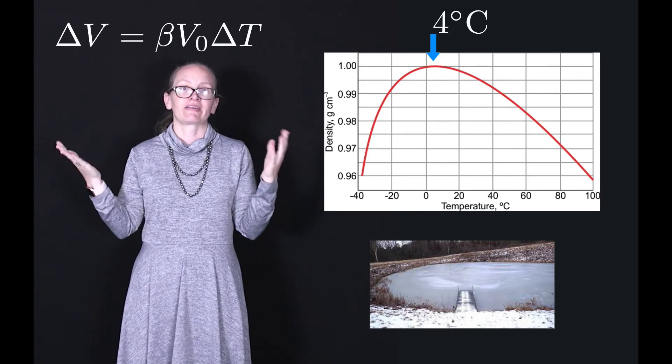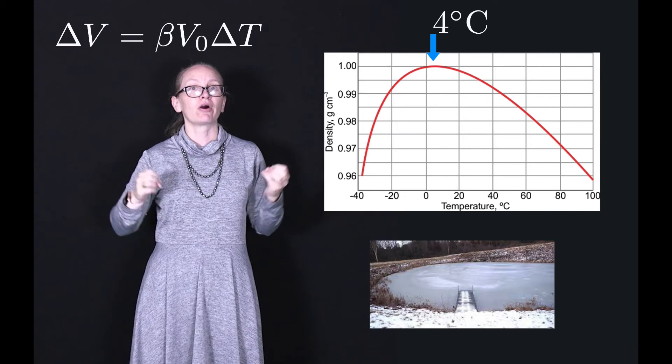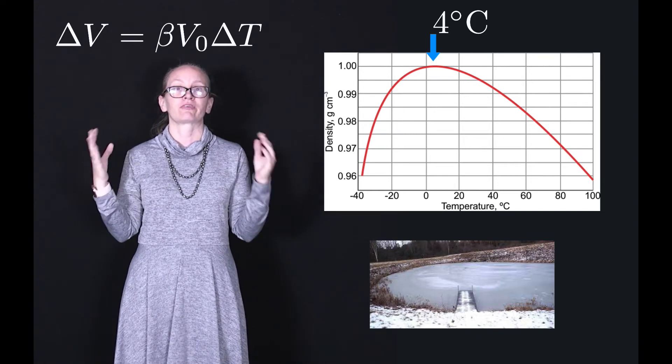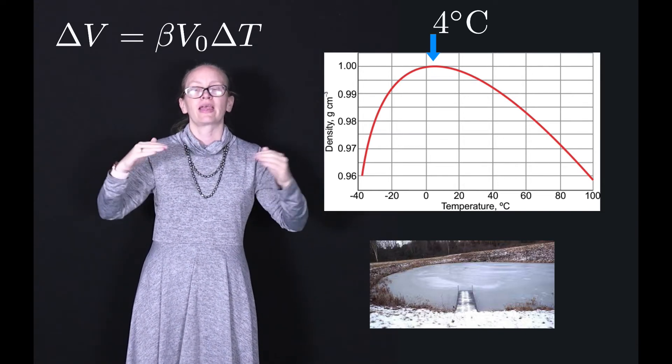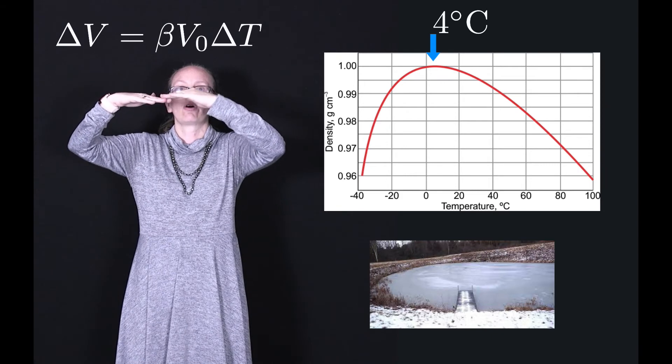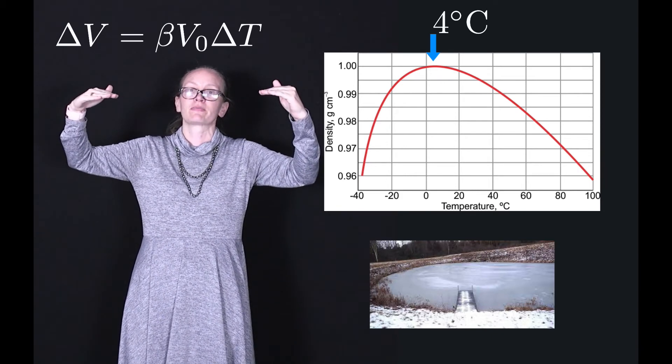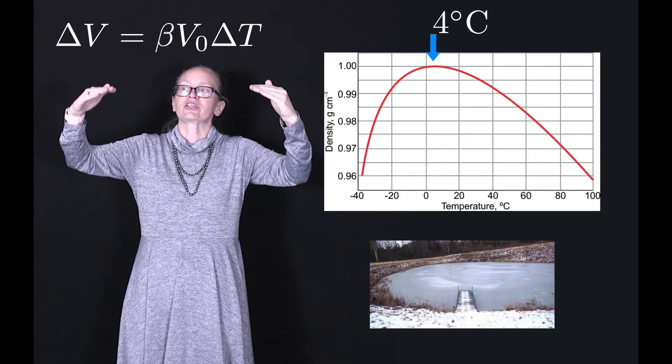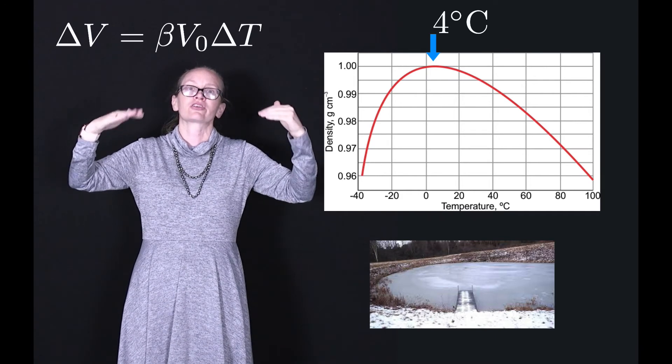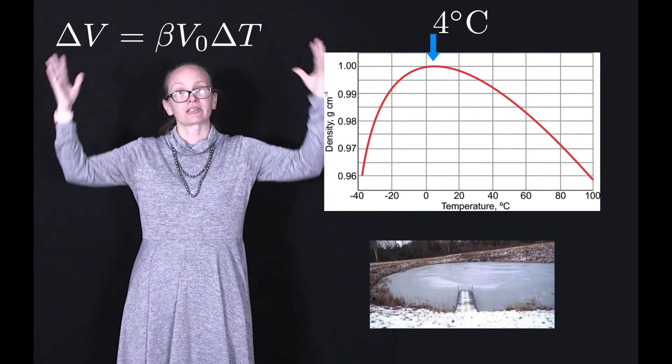Now this is actually very lucky for things which live in ponds and don't want them to freeze over winter. It means that the ice forms on the top and the ice forms a nice insulating layer which slows down the heat loss from the pond to the surroundings.